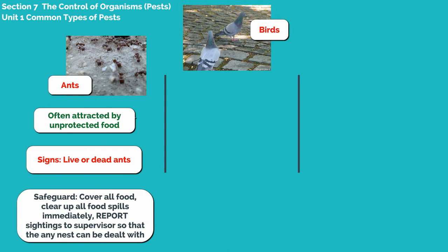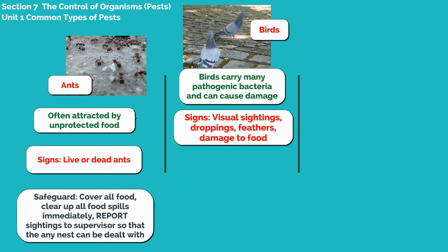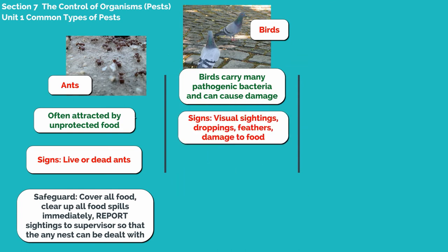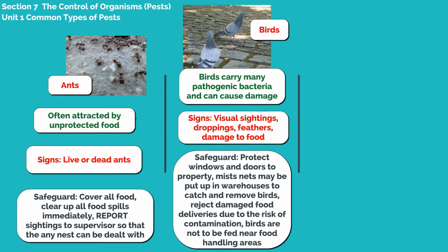Birds carry many pathogenic bacteria and can cause damage. Signs of them are visual sightings, droppings, feathers and damage to food. In order to safeguard, protect windows and doors to the property. Mist nets may be put up in warehouses to catch and remove birds. Reject damaged food deliveries due to the risk of contamination, and birds are not to be fed near food handling areas.